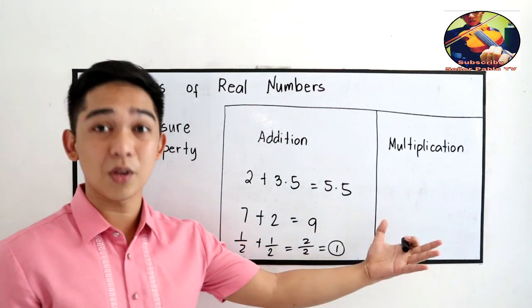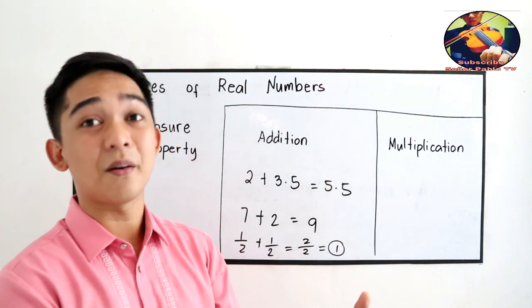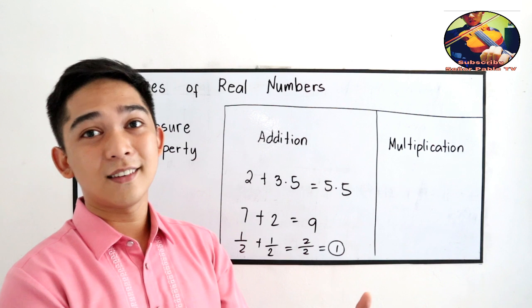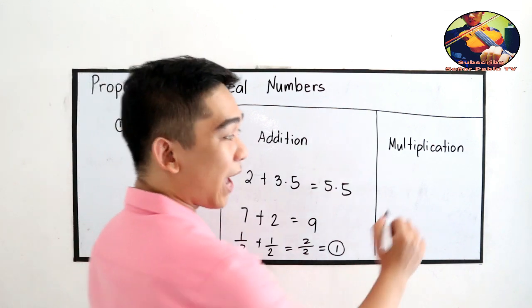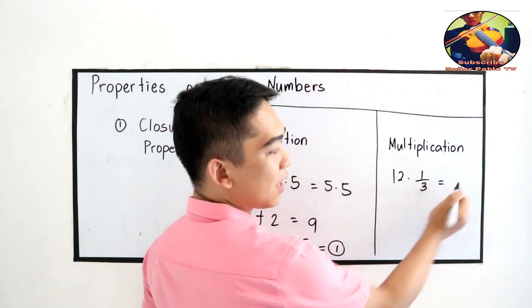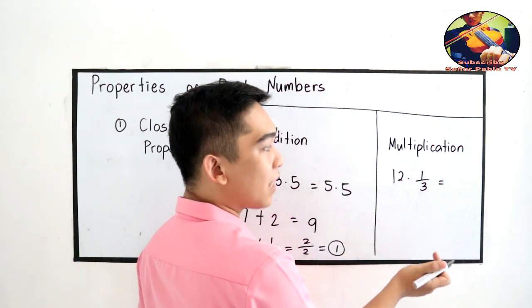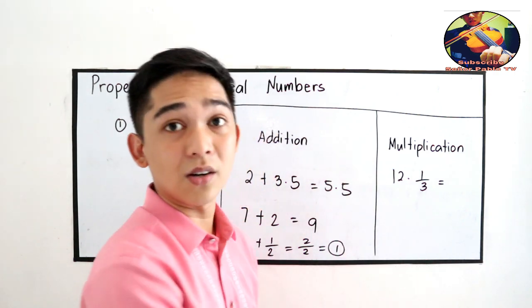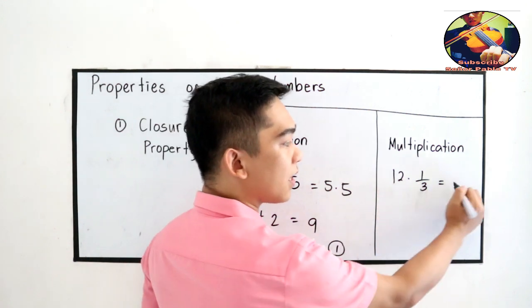Same case with multiplication. If you're going to multiply two different real numbers, then the product is real numbers also. So we have 12 times 1 third. We multiply a real number and another real number. Then the product is also a real number. So 12 times 1 divided by 3, that is 4.